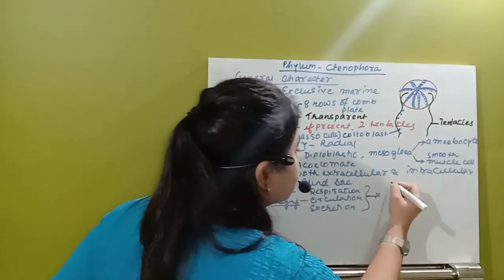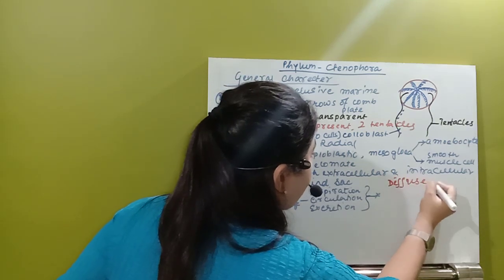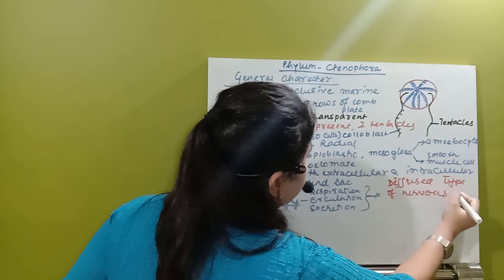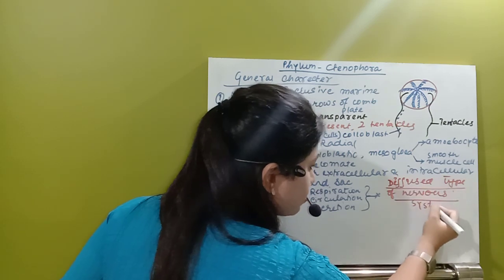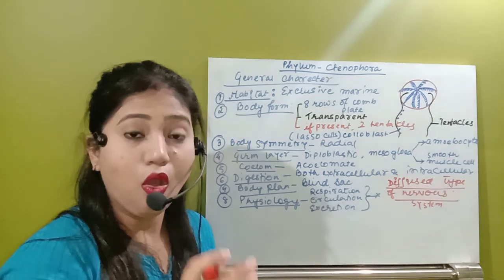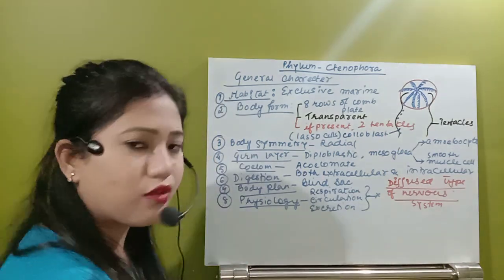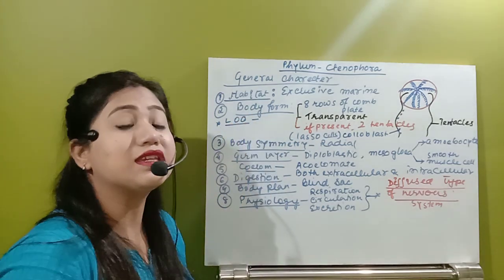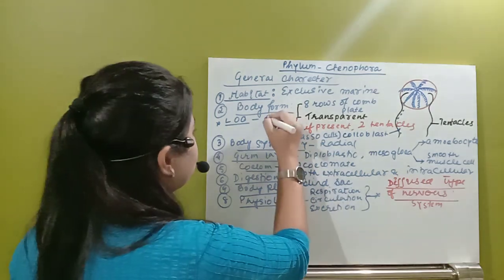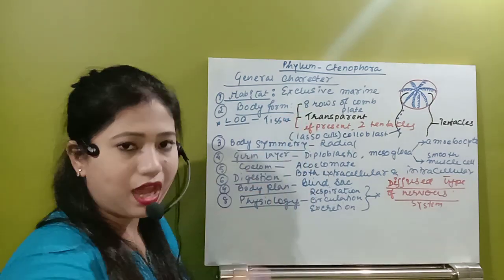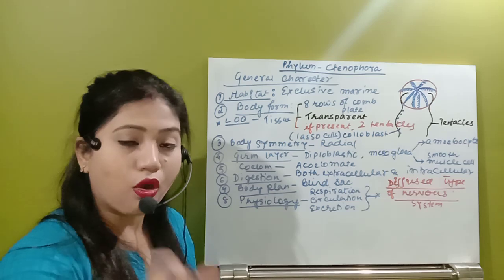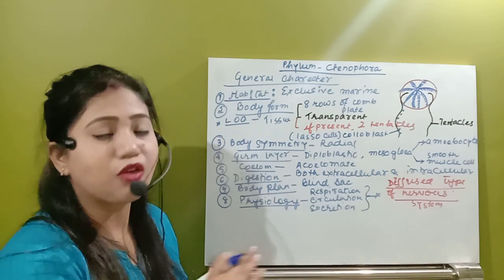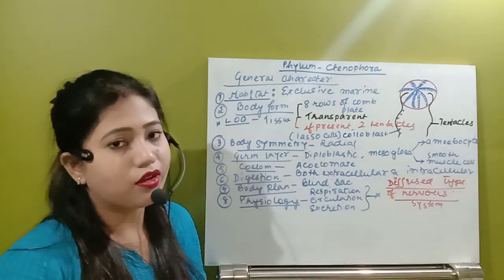Remember, a diffused type of nervous system is found. Don't think that their level of organization will be organ system level. They are going to have the same level of organization as the Cnidaria, which is tissue level of organization. That means those cells will be specialized into a function, meaning they are developing tissues. This organism has tissue level of organization.